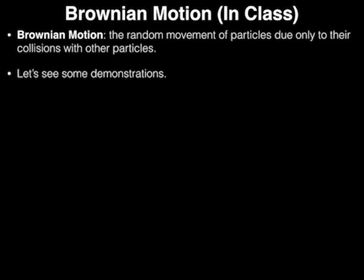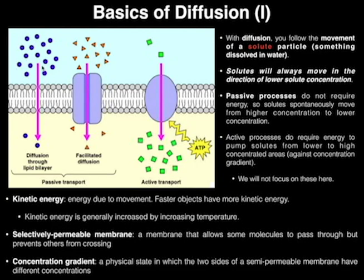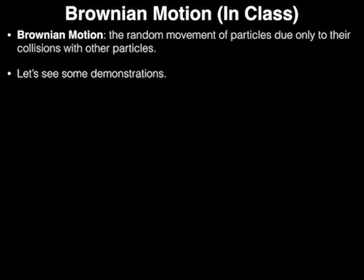And all of these particles, since they're in motion, they collide with one another. And when they collide, they change directions and everything's random. And that's a key. All of these particle movements, which we'll look at in a video in a minute, they're random movements and they're constantly colliding with each other. And so we have a concept in biology called Brownian motion. Brownian motion is the random movement of particles due only to their collision with other particles.